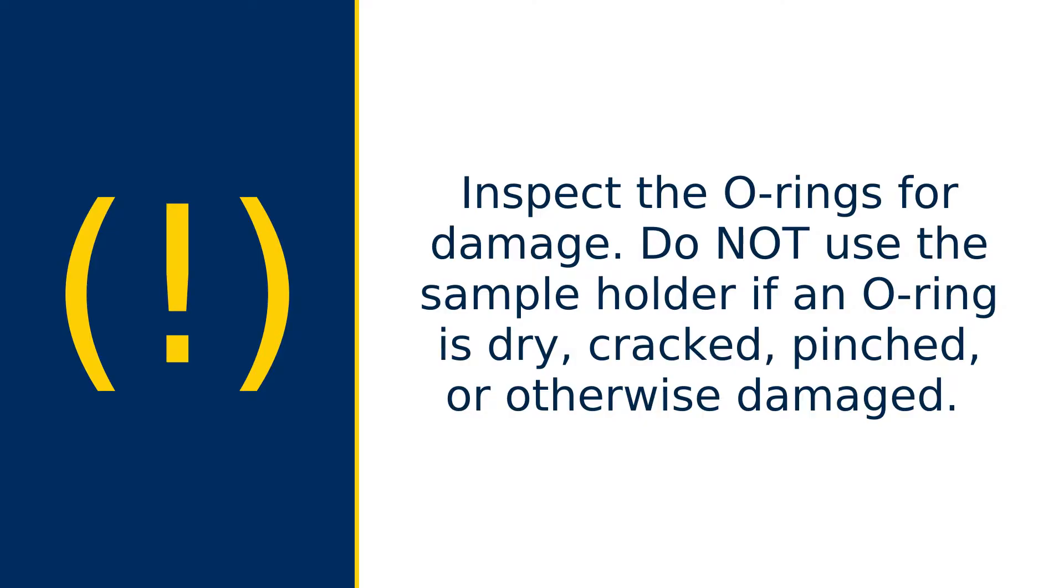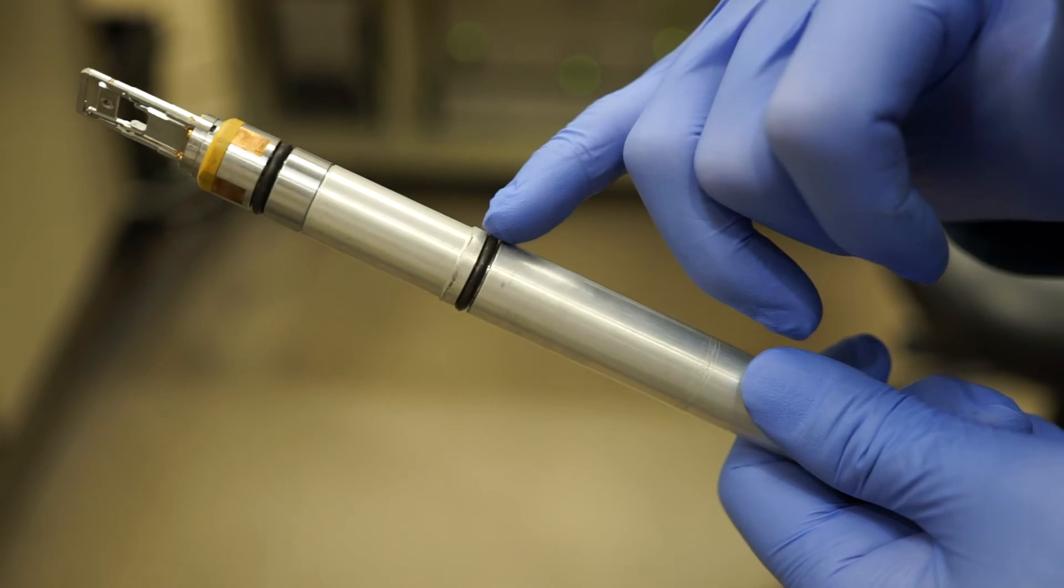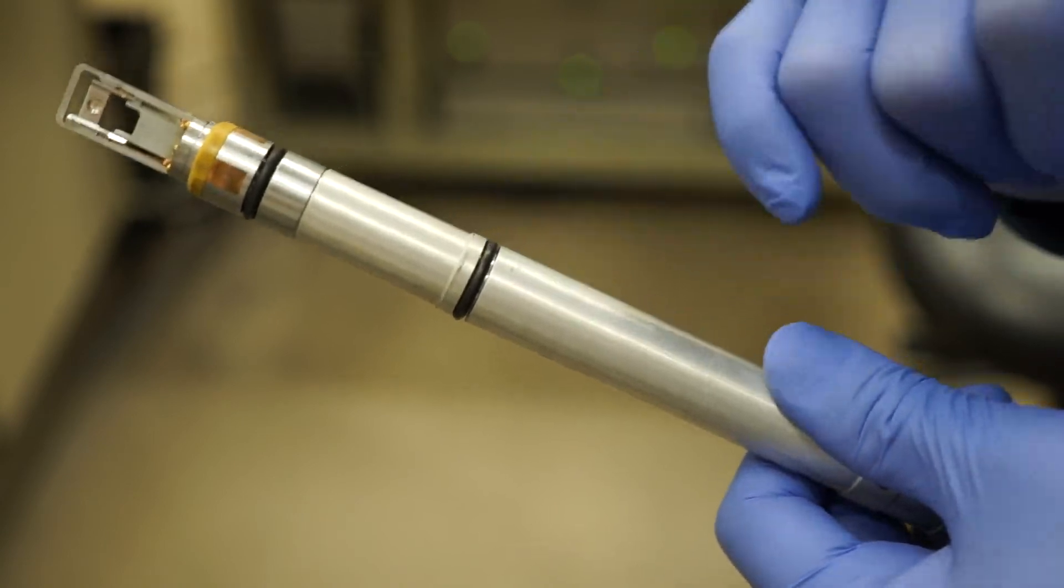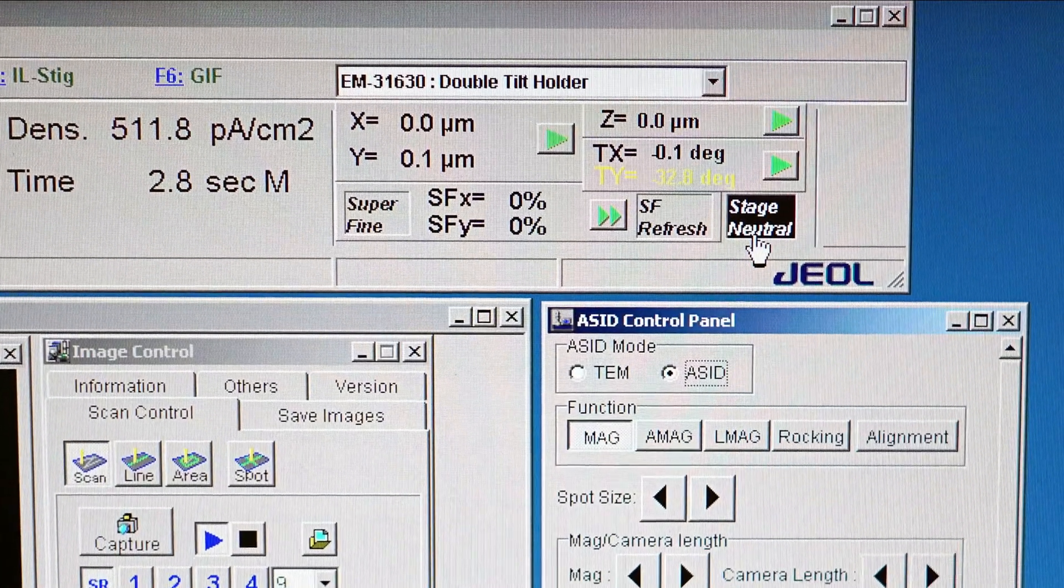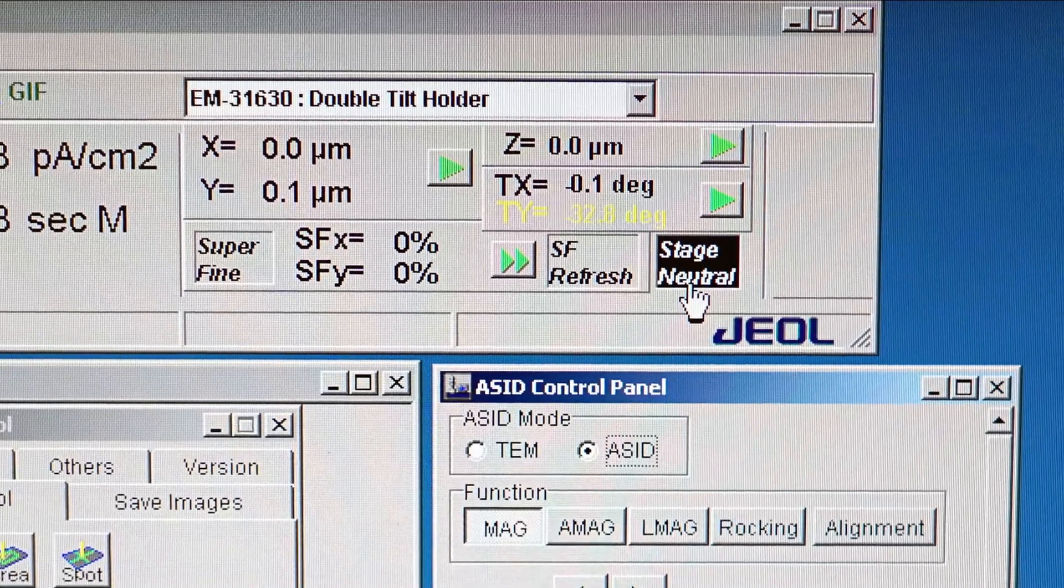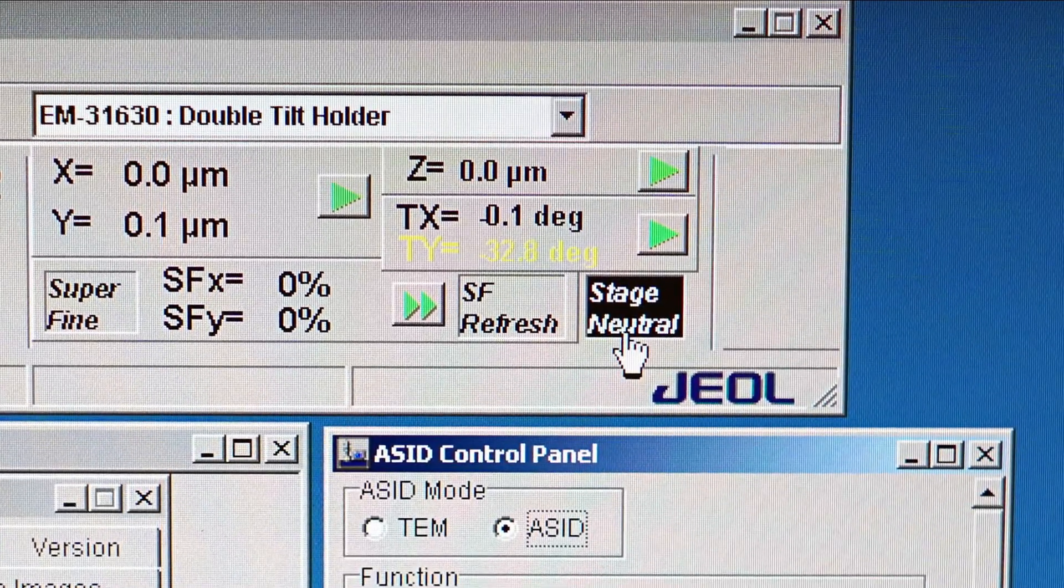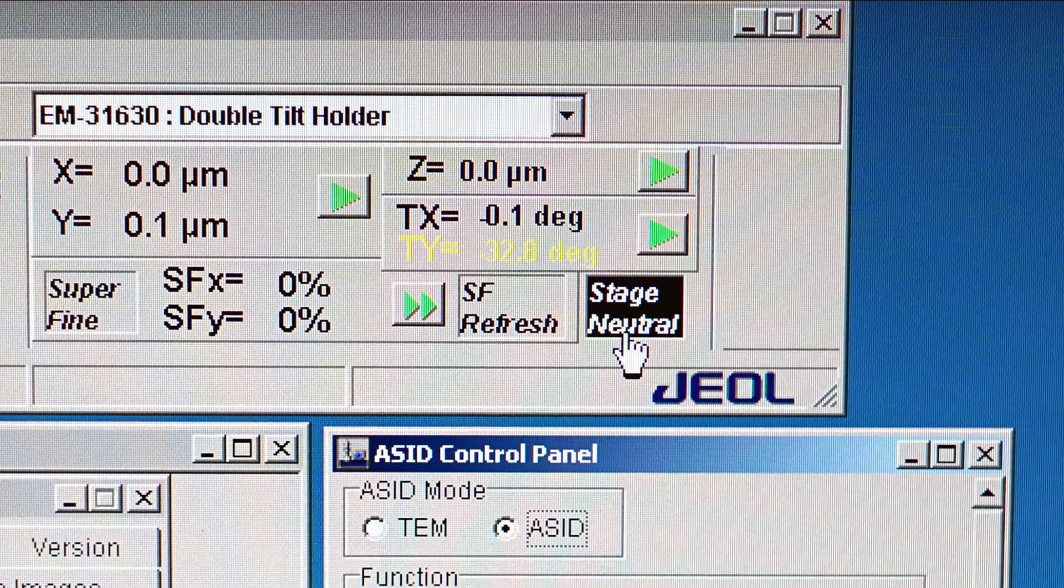Before you load the sample holder, inspect the o-rings for damage. Do not use the sample holder if an o-ring is dry, cracked, pinched, or otherwise damaged. The o-ring should be smooth and dust-free. If you see dust on the o-rings, gently wipe it away. Click stage neutral on the software before loading or unloading the sample holder. The TEM should always have a sample holder loaded.